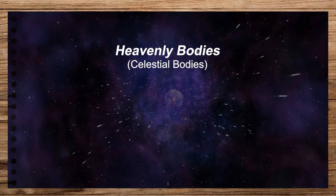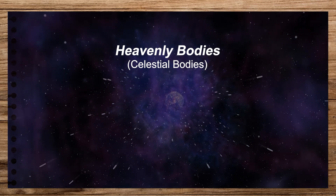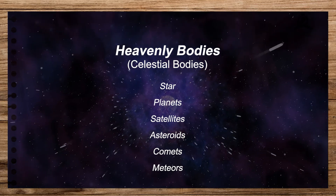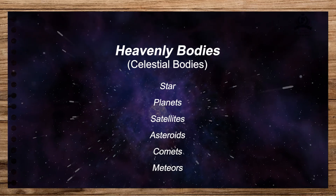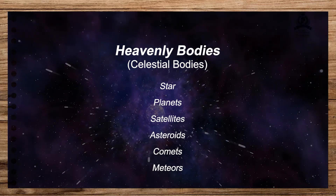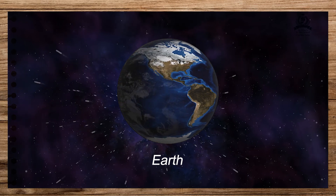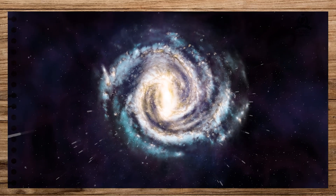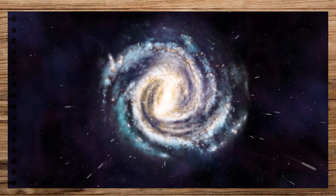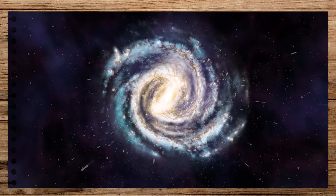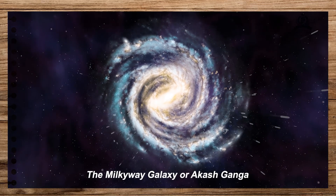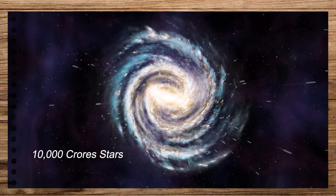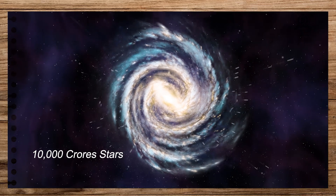All objects which we see in the sky are called heavenly bodies or celestial bodies. The heavenly bodies include the stars, planets, satellites, asteroids, comets, and meteors. Our Earth is also a heavenly body. Our Sun and all the stars that you see in the night sky belong to a galaxy called the Milky Way galaxy or the Akash Ganga. This galaxy has about 10,000 crore stars.